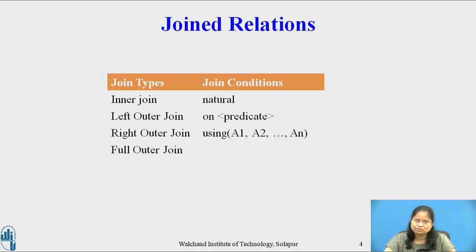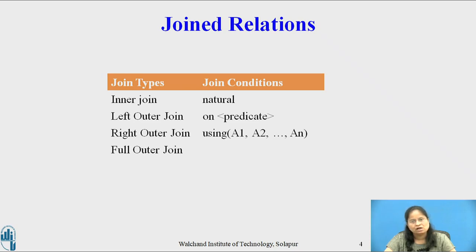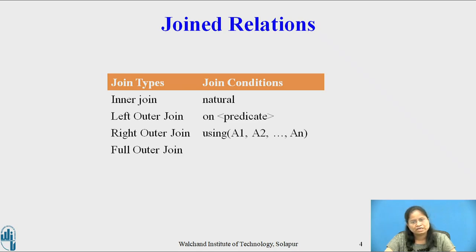In inner join, if the join condition is omitted, a Cartesian product results. Syntactically, the keyword natural appears before the join type, whereas the on and the using conditions appear at the end of the join expression. The keywords inner and outer are optional since the rest of the join type deduces whether the join is an inner join or an outer join.